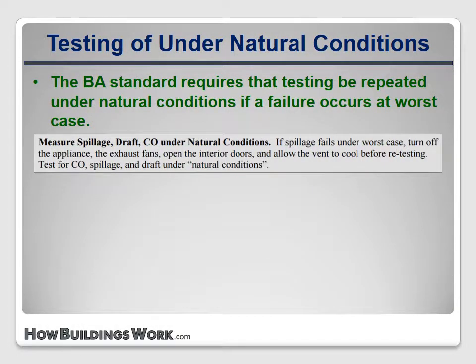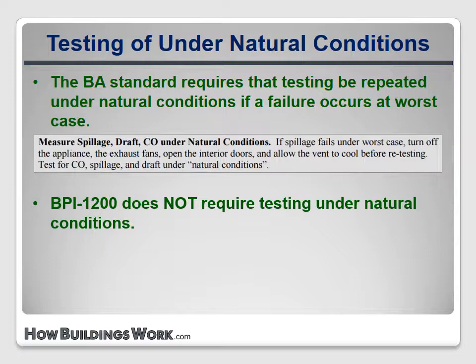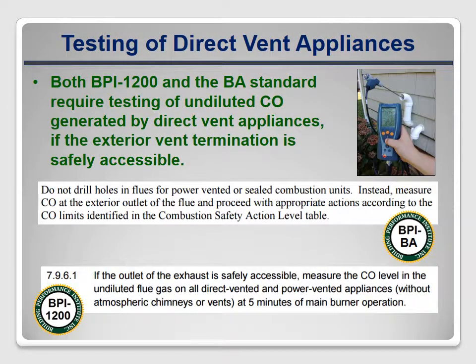The BA Standard includes a requirement that any appliance that fails the spillage or CO test under worst-case conditions be retested under natural conditions to help diagnose the reason for the failure. BPI 1200 does not include this requirement. Both standards require testing undiluted CO levels on direct vent appliances by measuring at the exterior termination. BPI 1200 adds the phrase 'if the outlet of the exhaust is safely accessible,' so you don't have to climb on the roof to get a measurement.